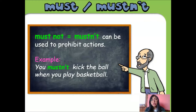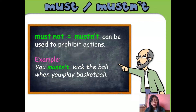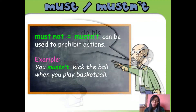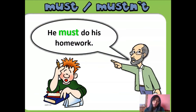For example, rules in your house: you must clean your room — that is an obligation. And to prohibit an action: you mustn't fight with your brother. I am using must to express obligation and mustn't to express a prohibition. We are going to see some examples, so pay attention.